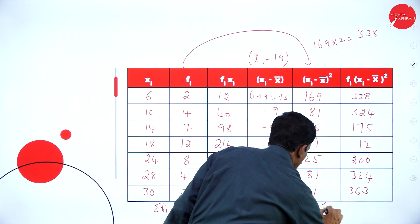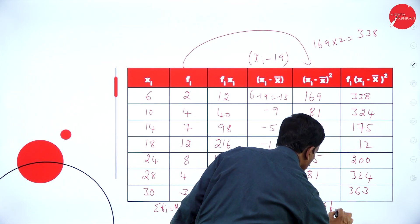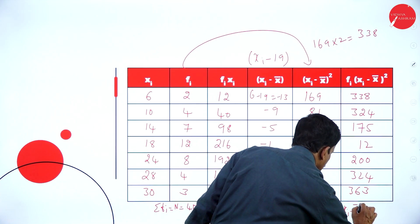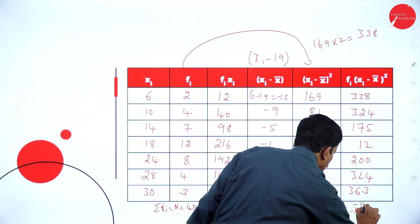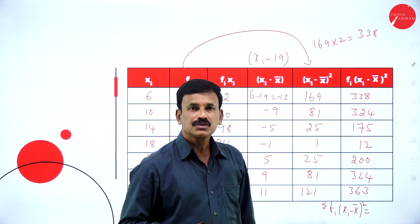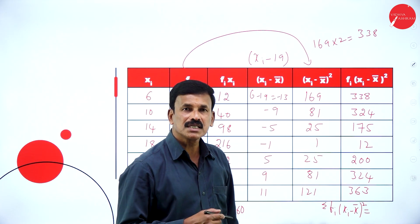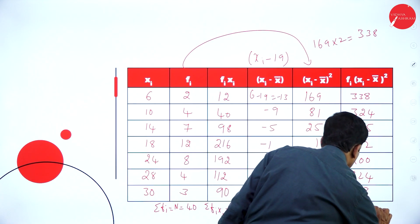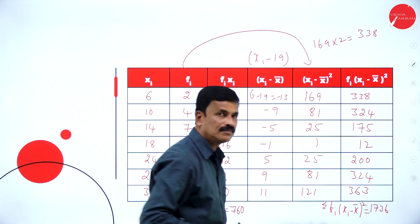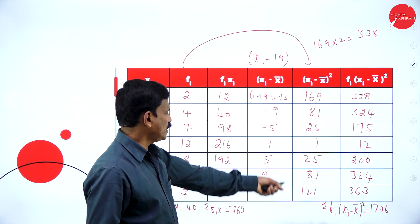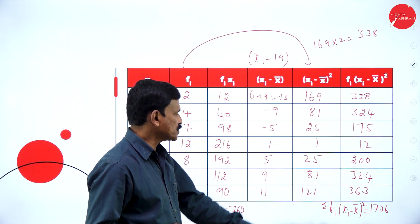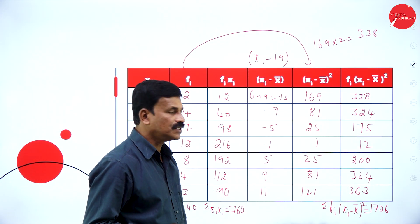Now add all these values. If you add, you will get sigma fi into xi minus x-bar whole square is equal to 1736.